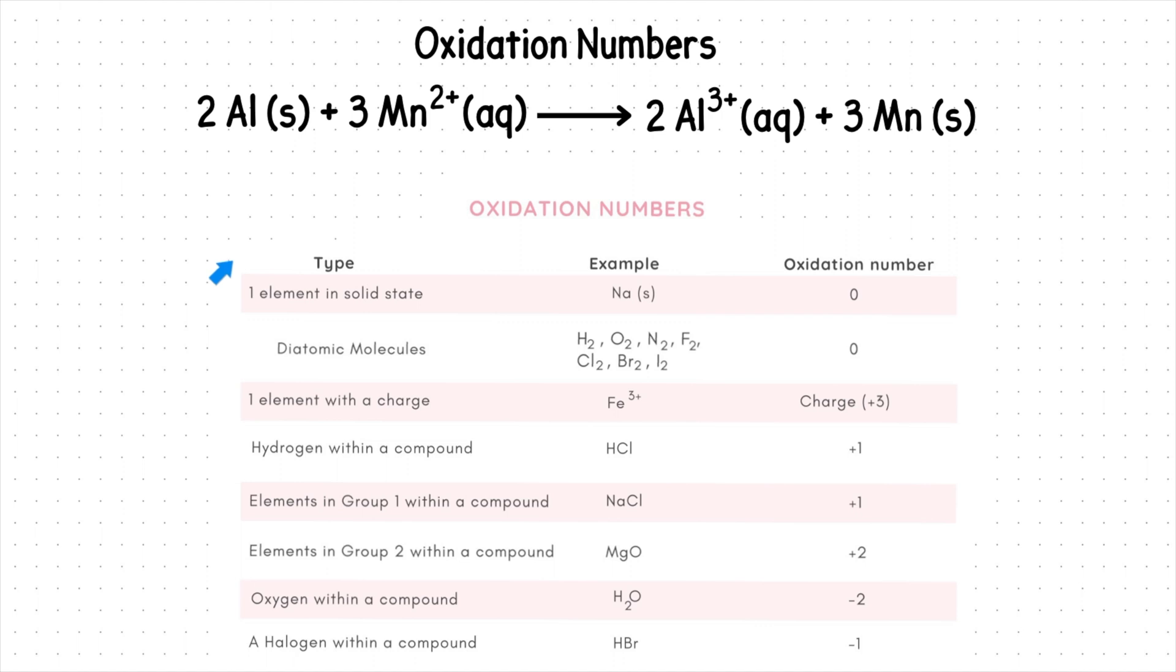Recall our oxidation number rules are as follows. If an element is by itself and is in its solid state, then it has an oxidation number of zero. So this aluminum has an oxidation number of zero and so does this manganese. The next rule that applies is when we have one element with a charge. That same charge is the oxidation number. So this manganese would be two and this aluminum would be three.